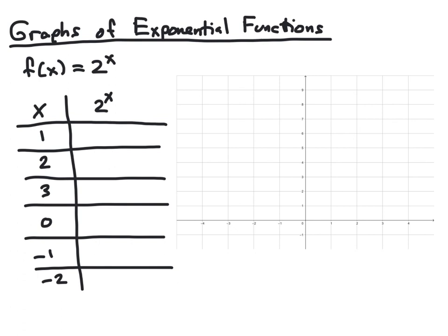Now that we know how to identify an exponential function, our next step is to look at the graphs of exponential functions and the general shape these graphs have. We're going to look at two different exponential functions. First, we'll consider f of x equals 2 to the x power. Like with most types of functions, we're going to make a table of values, choose different values of x, substitute them in to get our y values, plot our points on a grid, and then sketch the curve.